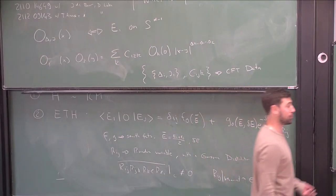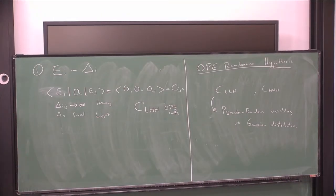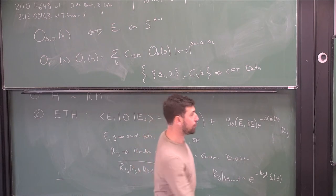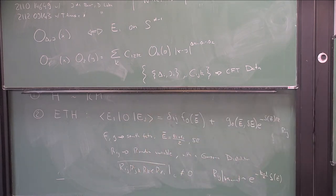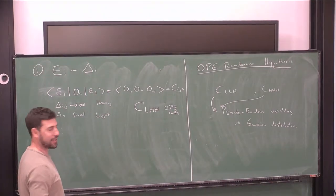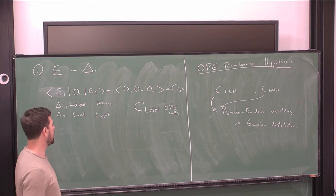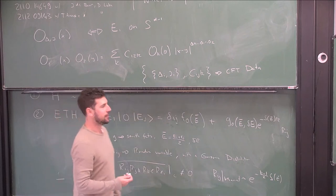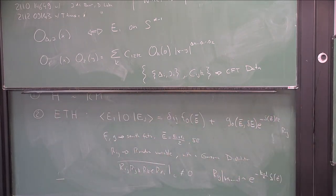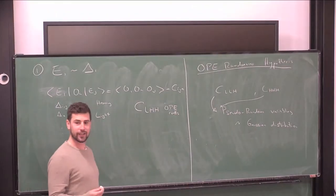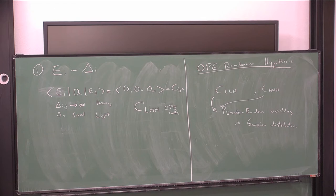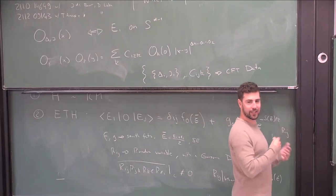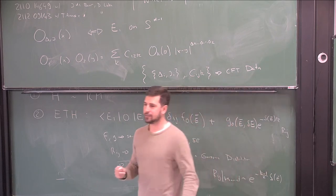They're slightly different than the light-heavy-heavy ones because they don't have a mean — the mean for them is zero — so they don't have the diagonal piece. But other than that, they behave like random variables with a Gaussian distribution. There's some variance that needs to be computed, but this is the property that these coefficients should satisfy. That's a conjecture, a hypothesis. What about light-light-light? Light-light-light don't need to have anything special because chaos is really about the thermodynamic limit, about very high energy states, and light-light-light is just not in that sector.